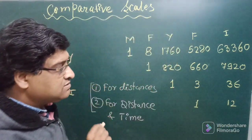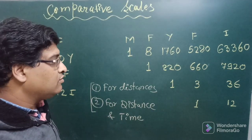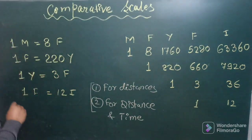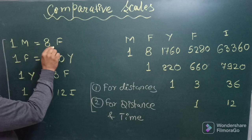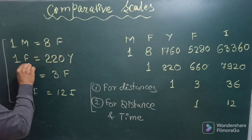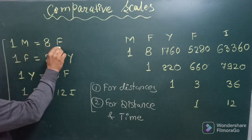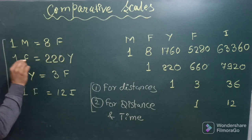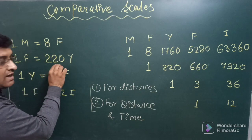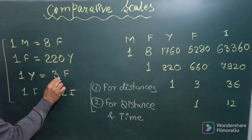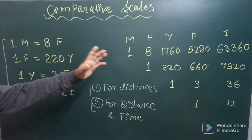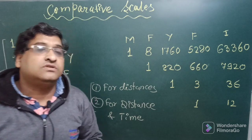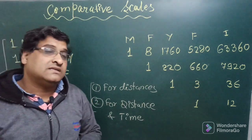One yard is equal to three feet, or 36 inches. One foot is equal to twelve inches — that is very well known. To summarize the chain: one mile equals eight furlongs, one furlong equals 220 yards, one yard equals three feet, and one foot equals twelve inches. Use this chain whenever questions on miles, furlongs, or yards are given.